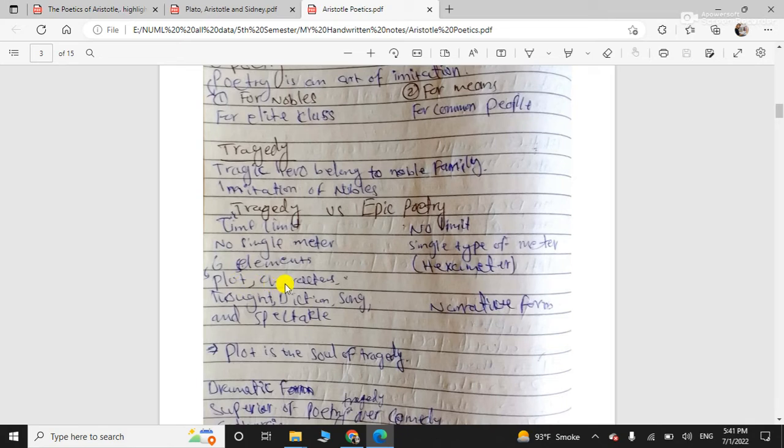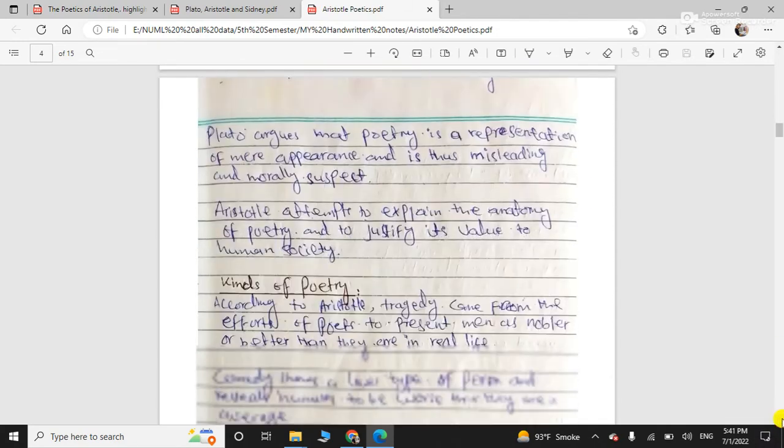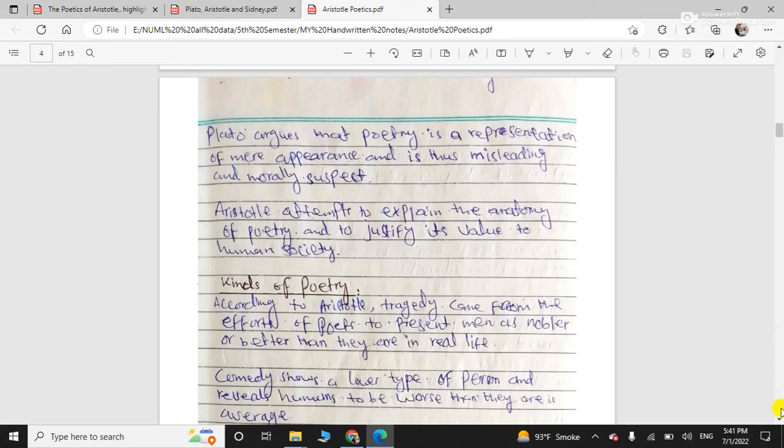And he discussed the elements of tragedy. We will discuss them in detail. Six elements of tragedy: plot, characters, thought, diction, song and spectacle. And we will discuss these elements in detail. They are very important.